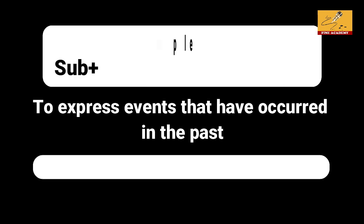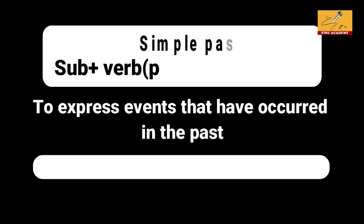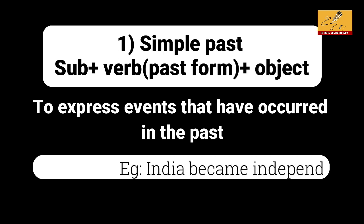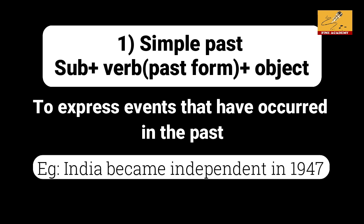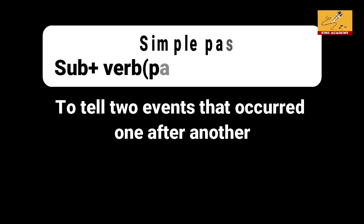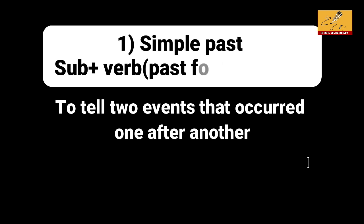Where do we use simple past? We use it for completed past events. For example: 'India became independent in 1947.' That is a simple past use — a historical fact completed in the past.